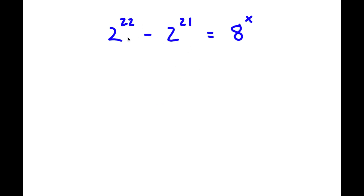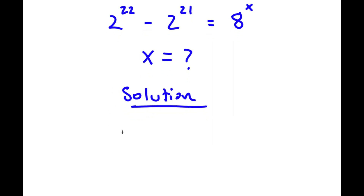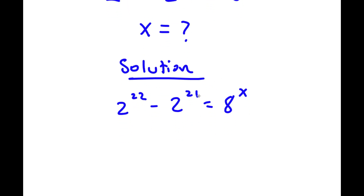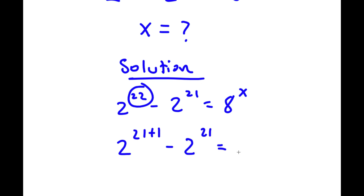In this problem I have 2 to the power of 22 minus 2 to the power of 21 is equal to 8 to the power of x. This problem looks complicated but it's actually easier than you might think. Since the exponent 22 is the same as 21 plus 1, I'm going to rewrite 2 to the power of 22 as 2 to the power of 21 plus 1, so I have 2 to the power of 21 plus 1 minus 2 to the power of 21 is equal to 8 to the power of x.